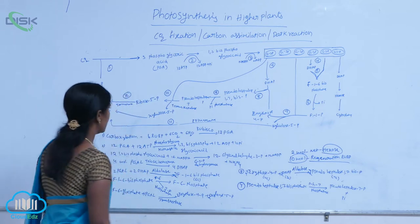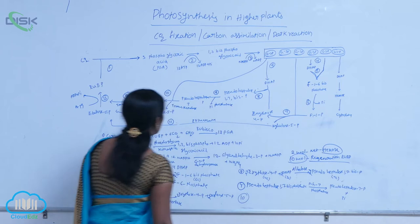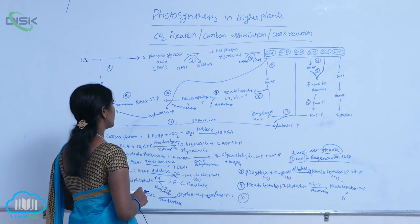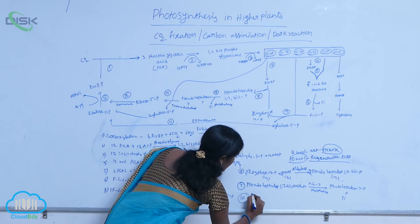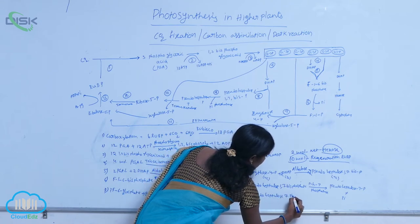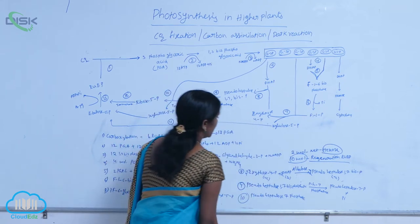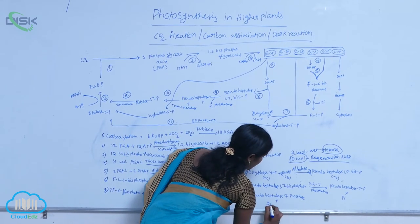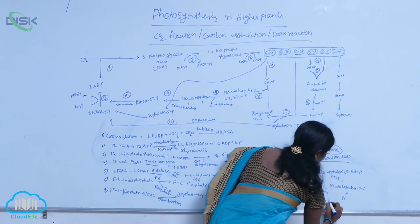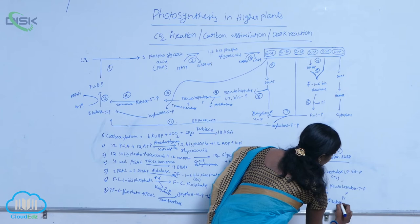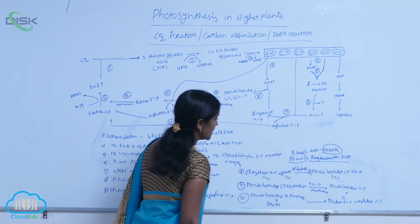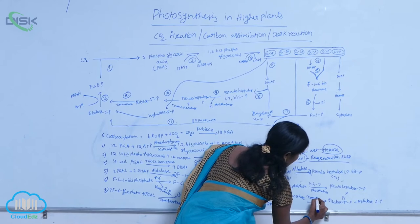The next is a cleavage reaction. Here, the pseudo-heptalose is cleaved into ribose 5-phosphate and xylulose 5-phosphate. Pseudo-heptalose 7-phosphate, by adding with 2 molecules of PGAL, is then converted into 2 forms: ribulose 5-phosphate and xylulose 5-phosphate. This reaction is mediated by transketolase.